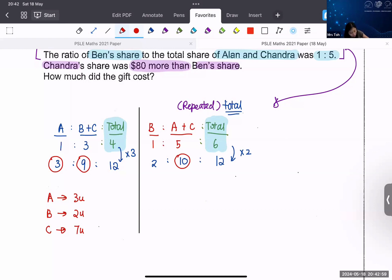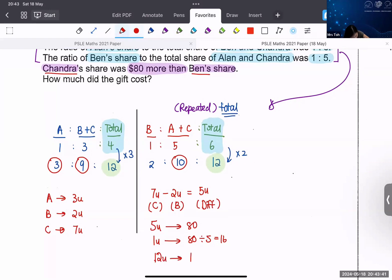Now what should I do? They say Chandra compared to Ben the difference is 80. Let's look at Chandra and Ben. 7 unit minus 2 unit is the difference between Chandra and Ben which is 5U. 5U stands for $80. And then after that how many units am I supposed to find? 12 units. So, 1U is 80 divided by 5 is 16. You are supposed to find the total which is, in this case, 12U the cost of the gift is the total of their 3 shares. 16 times 12 will give us 192.